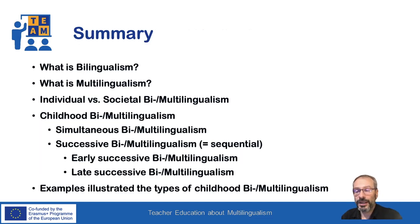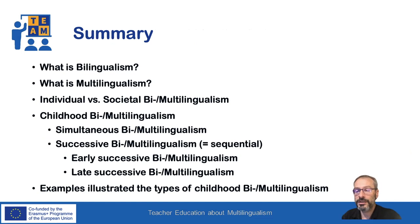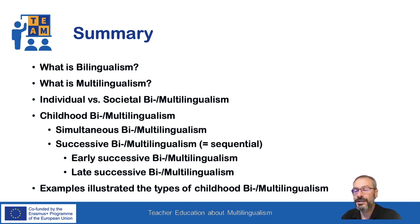To summarize, this presentation introduced the terms bilingualism and multilingualism and the difference between individual versus societal multilingualism. Within childhood multilingualism, the distinction was made between simultaneous versus successive and between early versus late successive multilingualism. Examples of children and their language histories illustrated the different types of childhood multilingualism.